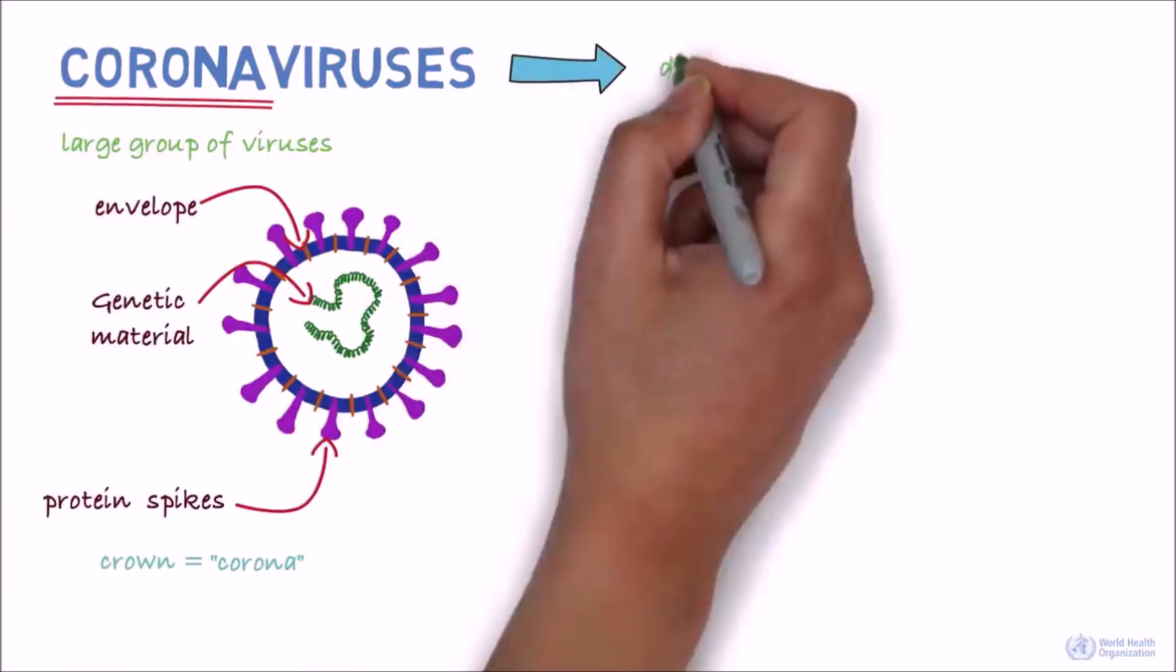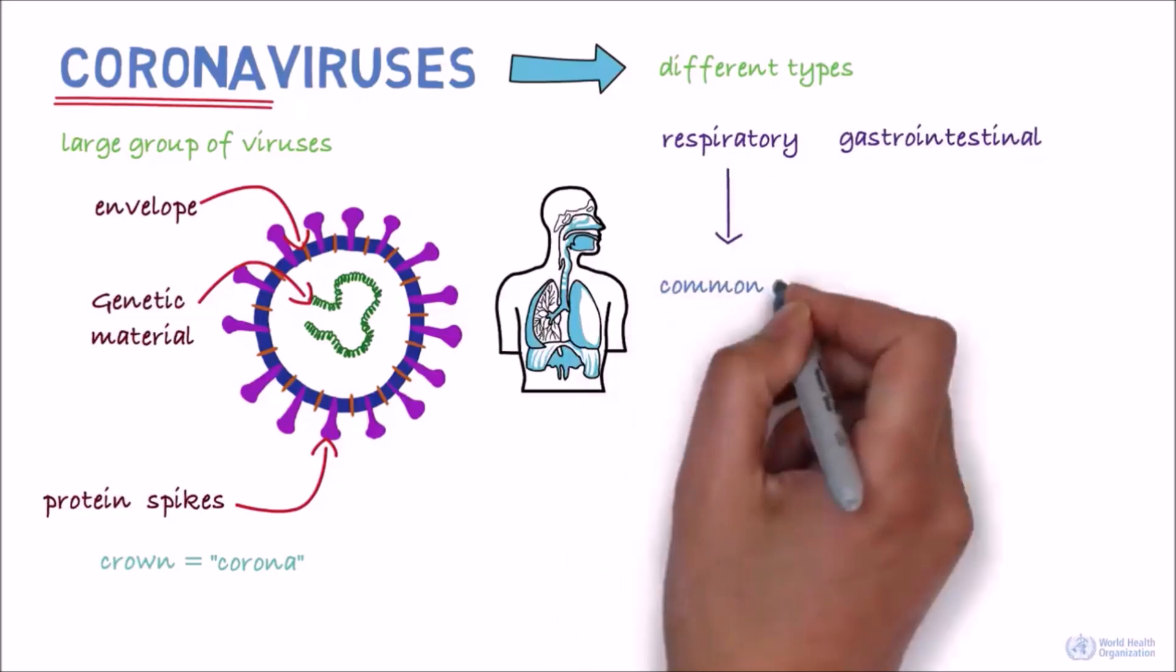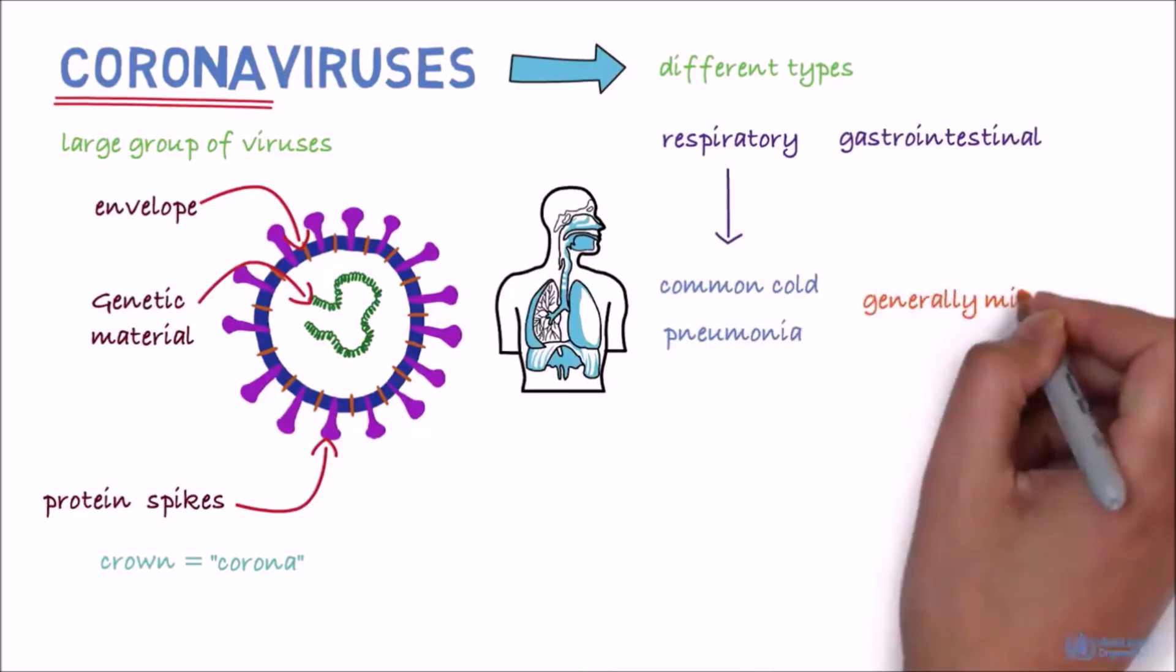There are different types of coronaviruses that cause respiratory and sometimes gastrointestinal symptoms. Respiratory disease can range from the common cold to pneumonia, and in most people the symptoms are mild.